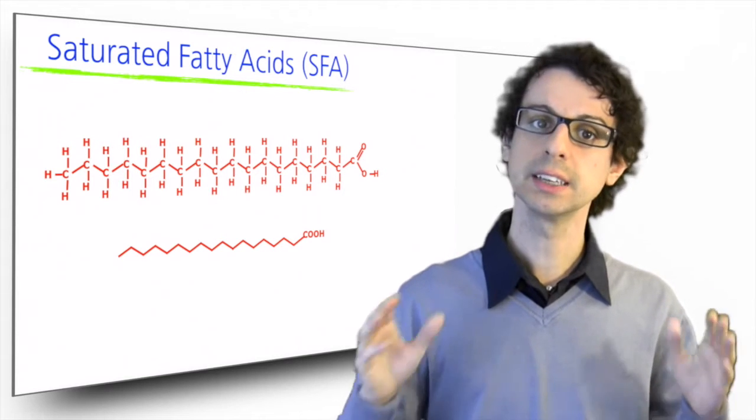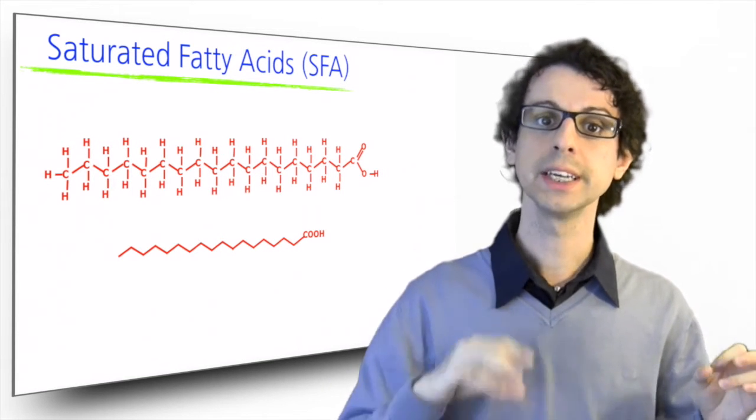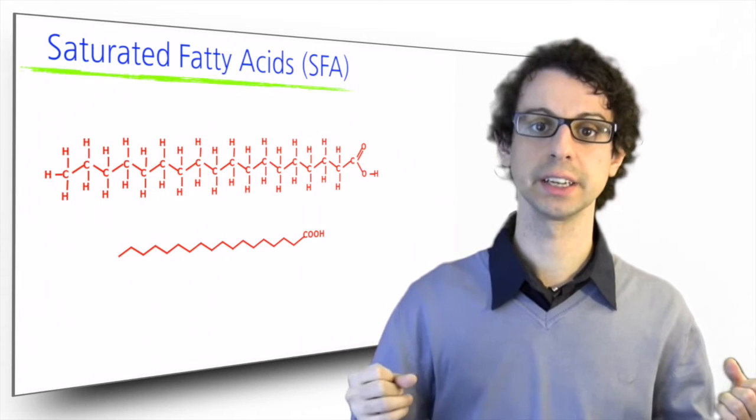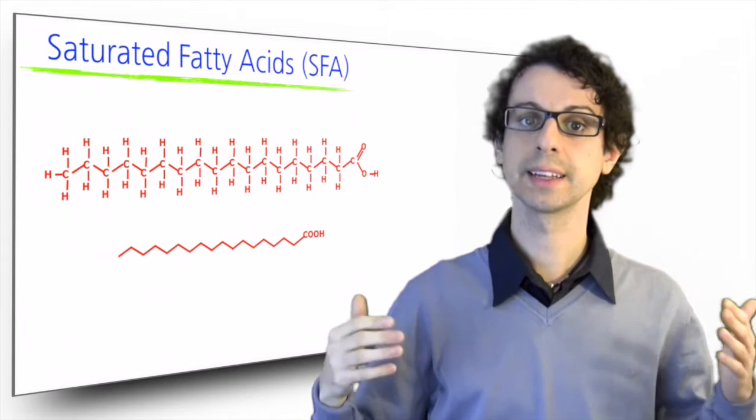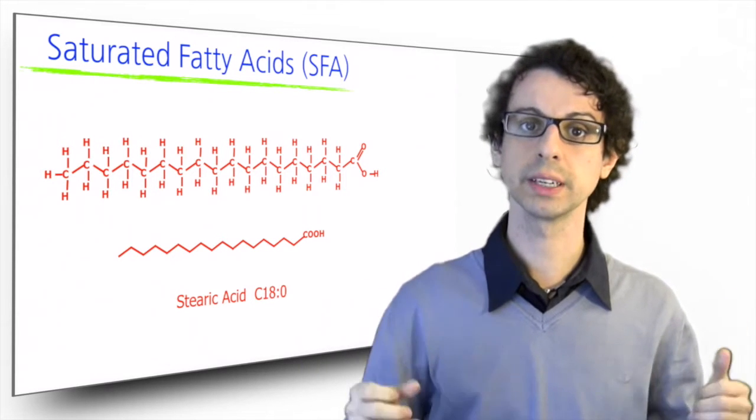This is the very same molecule, it's just another way of representing it. Each point is a carbon, each line is a bond between carbons, and hydrogens are not indicated. We can also write it like this: C18 for 18 atoms of carbon, and a zero to indicate it's saturated.